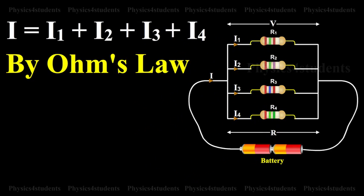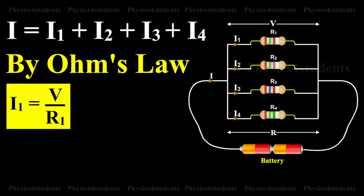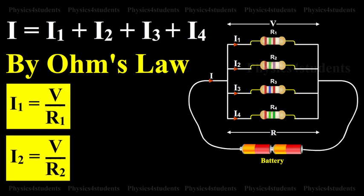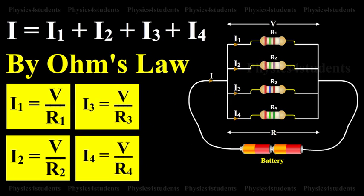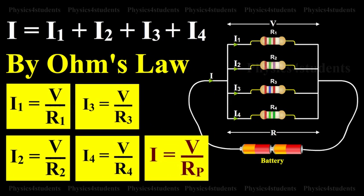So, by Ohm's law, I1 is equal to V by R1, I2 is equal to V by R2, I3 is equal to V by R3, I4 is equal to V by R4 and I is equal to V by Rp.